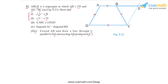Here's the construction for this hint. AB has been extended as a ray, and through C, a line has been drawn that is parallel to DA, and this line intersects AB produced at E. This construction will allow us to solve all parts of this problem.